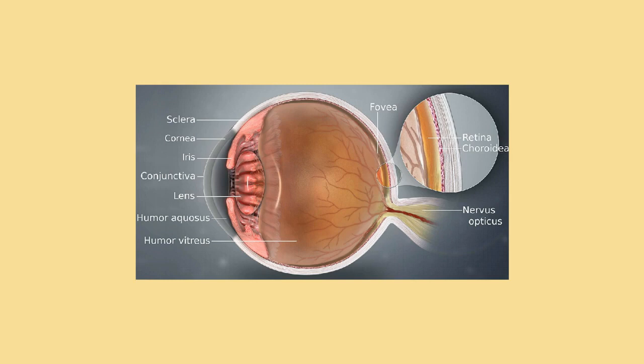The approximate field of view of an individual human eye, measured from the fixation point (i.e., the point at which one's gaze is directed), varies by facial anatomy, but is typically 30 degrees superior (up), limited by the brow; 45 degrees nasal, limited by the nose; 70 degrees inferior (down); and 100 degrees temporal, towards the temple.